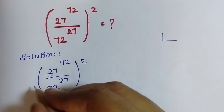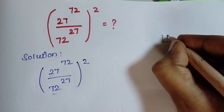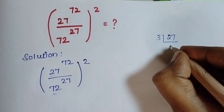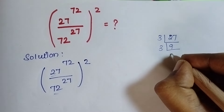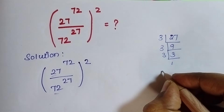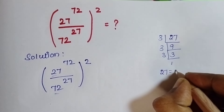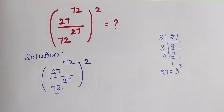First, I am going to find the prime factorization of 27. Three nines are 27, three threes are 9, three times 1. Therefore, 27 is equivalent to 3 cubed.